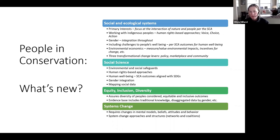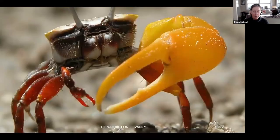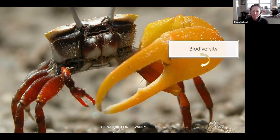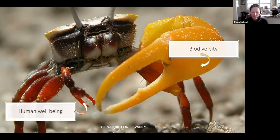The Nature Conservancy is like a fiddler crab — we have this giant claw of understanding when it comes to describing, mapping, and assessing biodiversity, and then this really underdeveloped claw when it comes to human well-being. Our challenge is to resolve the connected human well-being elements of our strategy as rigorously and with as much detail as we do our biodiversity work. We want to equalize these two claws. Maybe we can learn from Latin America.